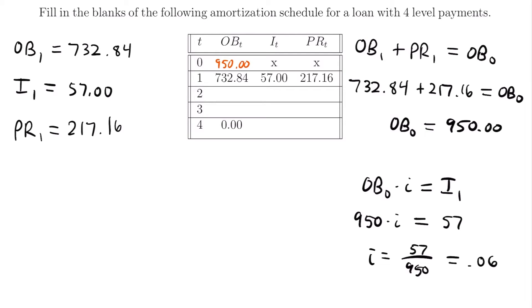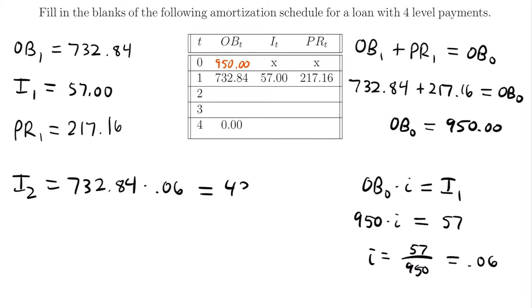We now know the interest rate is 0.06. Multiplying the interest rate by the outstanding balance at time equals one gives us the interest accumulated at time equals two. So I₂ equals 732.84 times 0.06, which equals $43.97. We can fill that in: $43.97.